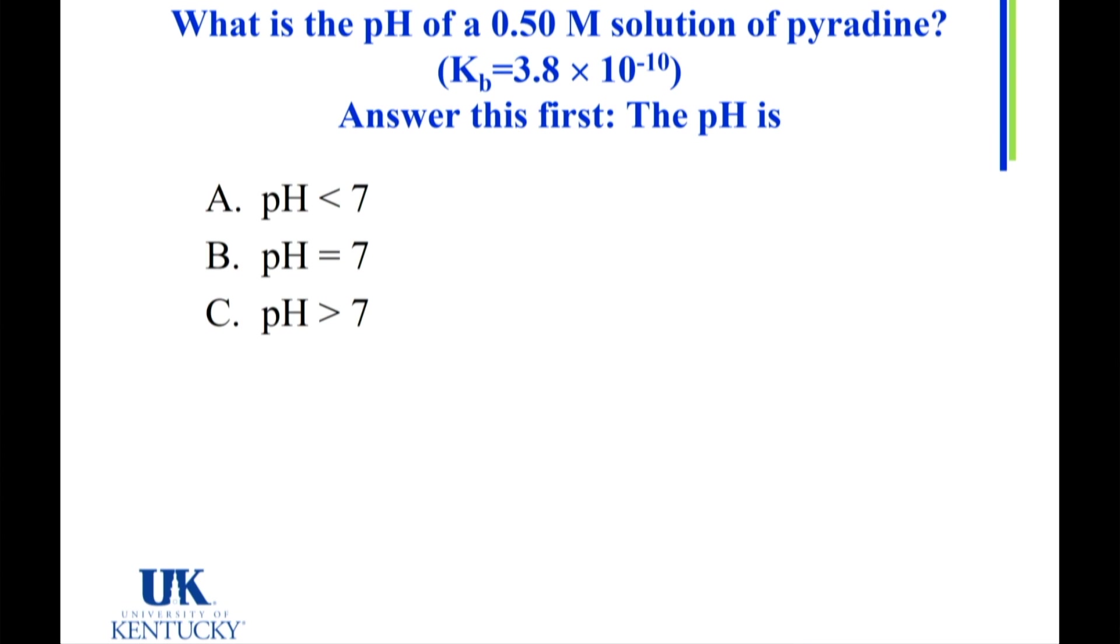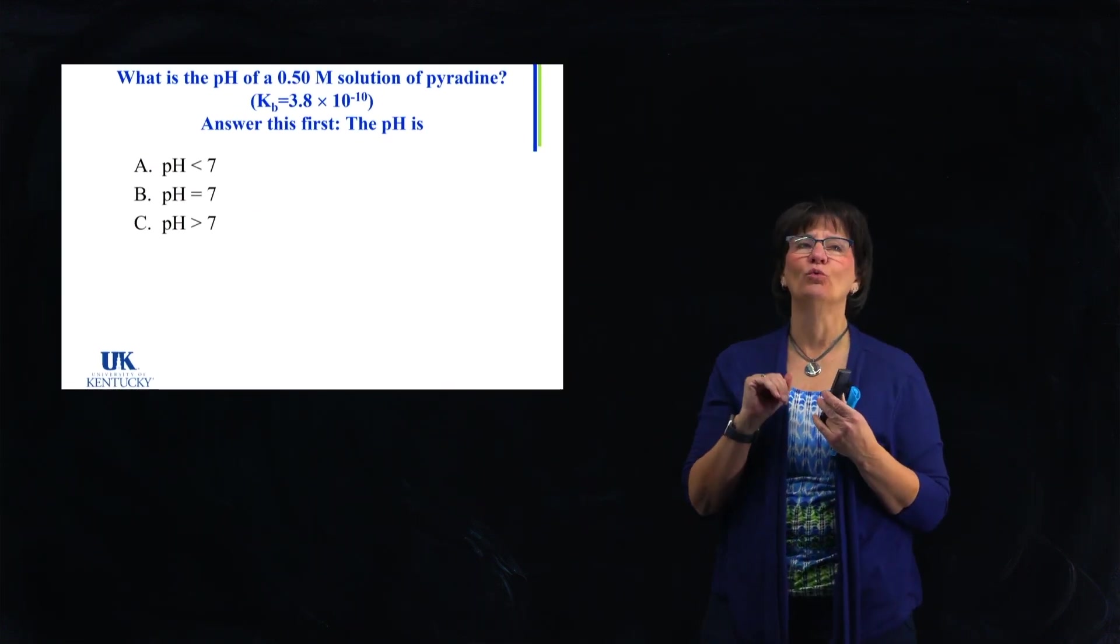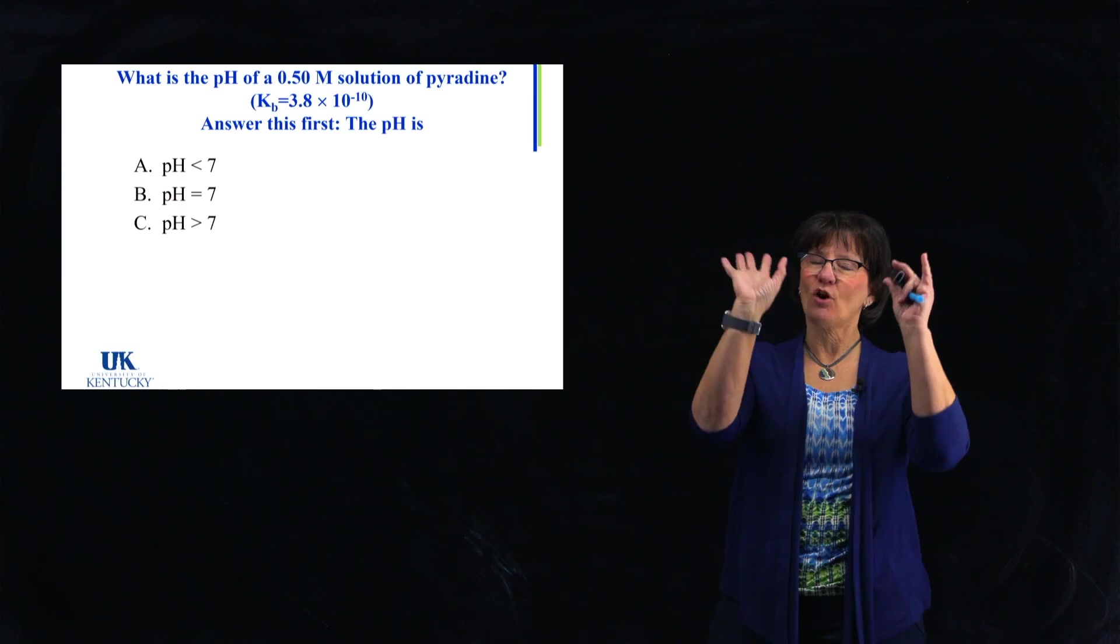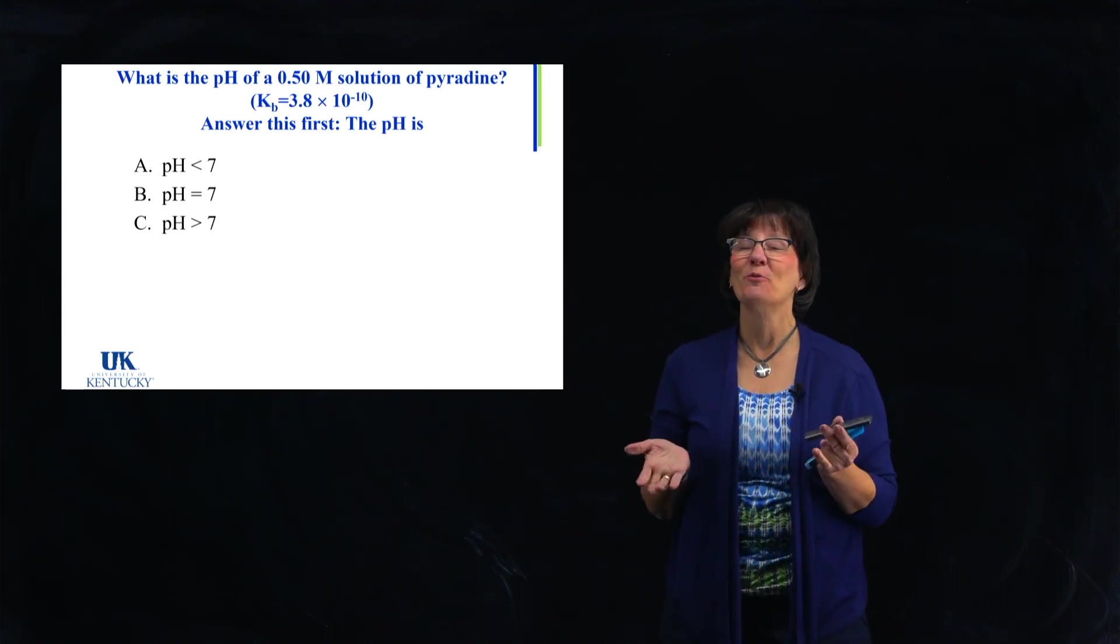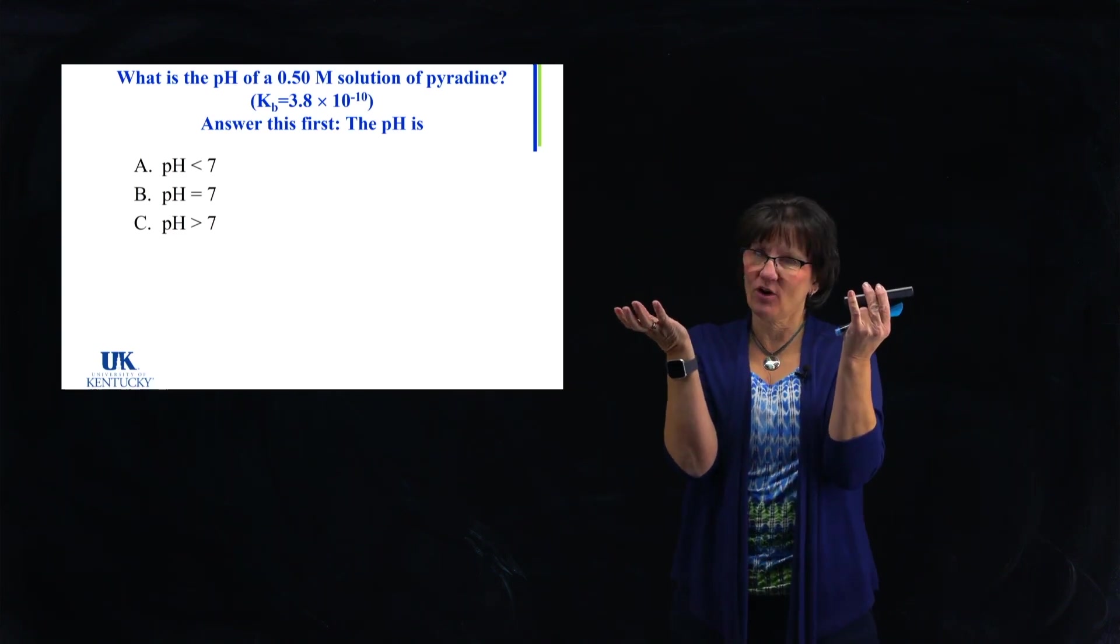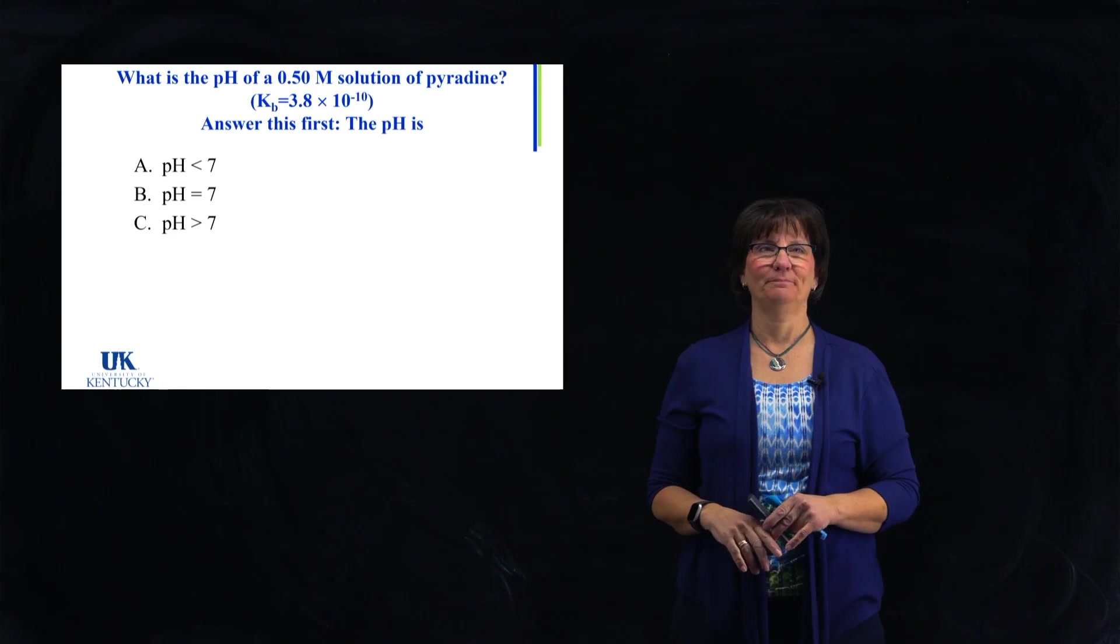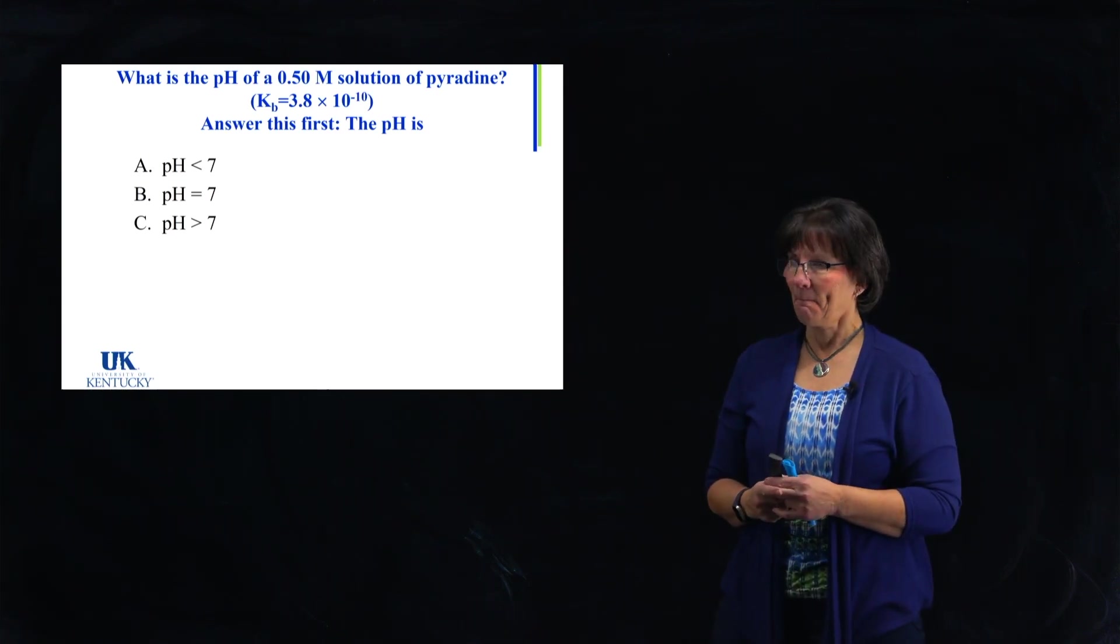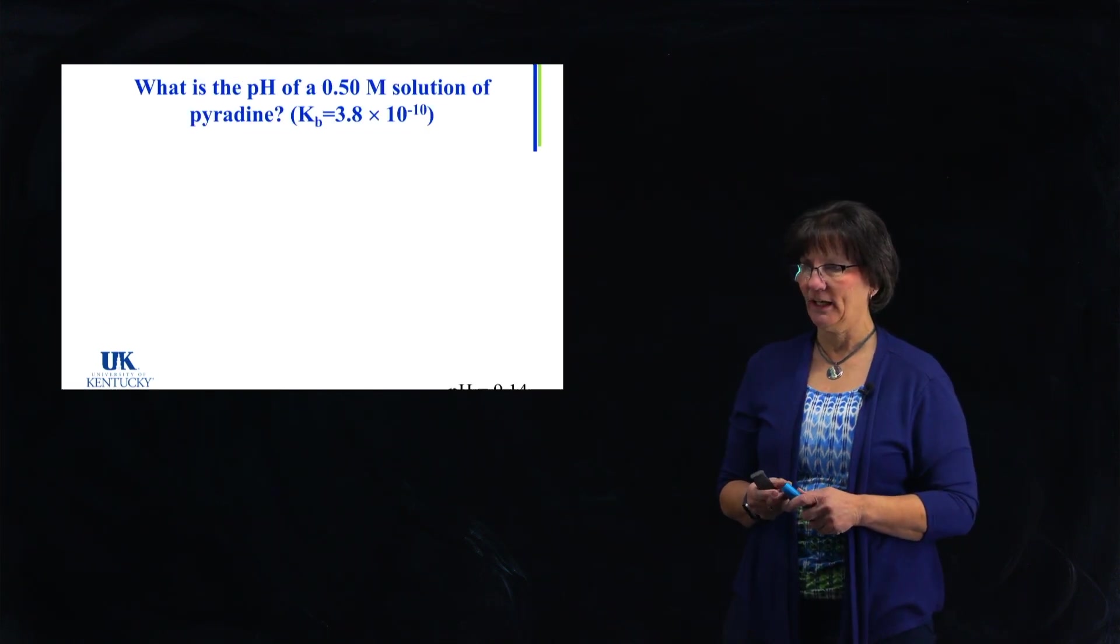Well, it's a base. And when you put a base in solution, according to the Arrhenius definition, you raise the hydroxide concentration. Raising the hydroxide concentration means you're raising the OH minus concentration, the hydroxide concentration, that lowers the H3O plus concentration, which gives you a pH above 7. Now we're ready to work the problem. So we'll actually just work it here.